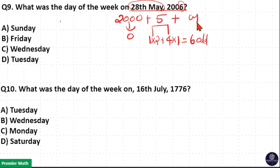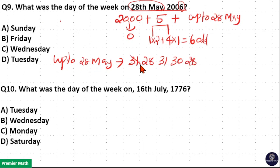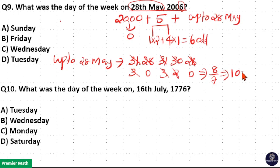Now remaining is up to 28th May — that is January 2006 to 28th May. January has 31 days, February 2006 is a non-leap year so 28 days, March 31, April 30, May only up to 28 so 28 days. Odd days: 31 gives 3, 28 gives 0, 31 gives 3, 30 gives 2, 28 gives 0. Total: 3 + 3 + 2 = 8. Then 8 ÷ 7 gives remainder 1, so 1 odd day.